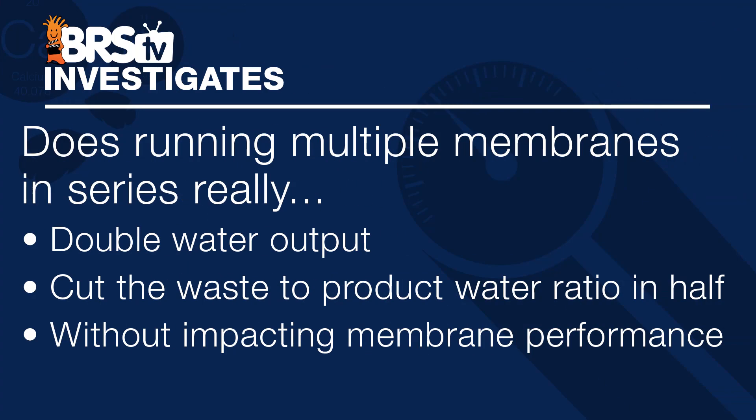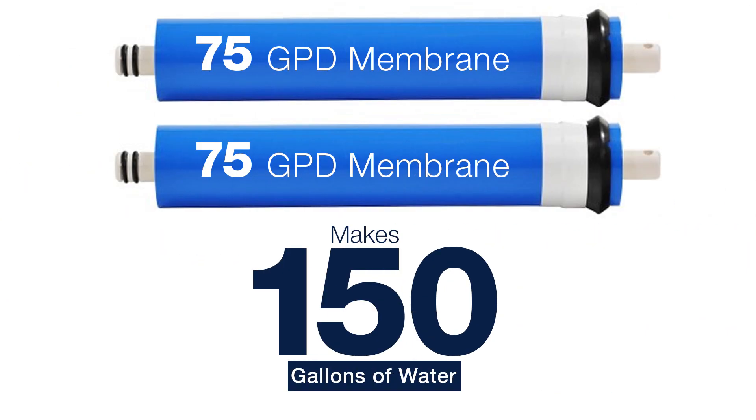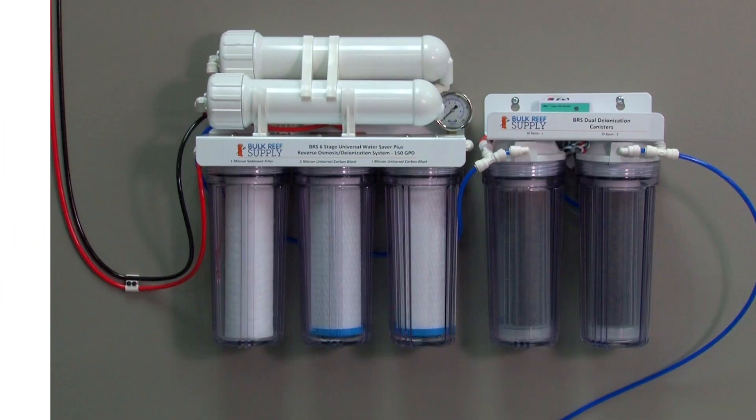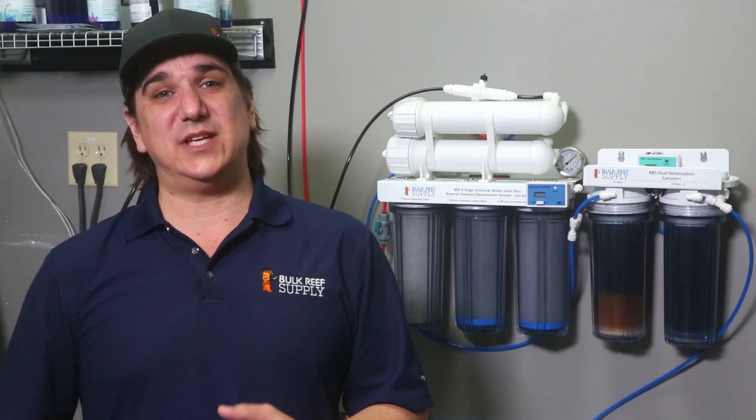This week we are testing if these upgrade kits which run multiple membranes in series really double water output and cut the waste to product water ratio in half without significantly impacting membrane performance and longevity. I think almost anyone will conclude that if one 75 gallon per day membrane produces 75 gallons a day of RO water, then two membranes will obviously produce 150 gallons a day. However, there is some debate as to the best way to do that with different plumbing techniques. One camp saying running the membranes in parallel is best and the other in series. I can tell you right now there is a huge performance difference between the two.